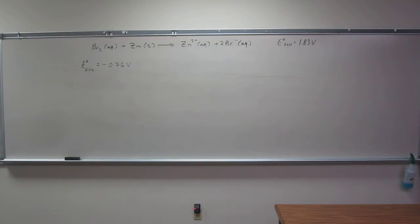Okay, so let's try to calculate an unknown half-cell potential from the potential of the entire cell. A voltaic cell houses a reaction between aqueous bromine and zinc metal given to you up there in that balanced equation.